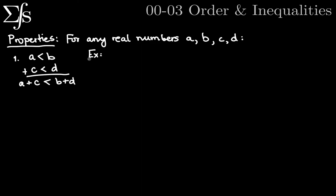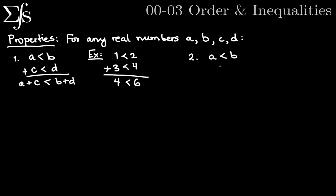Quick example: one is less than two, and three is less than four. Adding those two inequalities, one plus three is four and two plus four is six, so four is less than six — it still checks out. The second property is we can add a constant value: if A is less than B, I can add C to both sides, and C can be any number — positive, negative, or zero. So A plus C is less than B plus C.